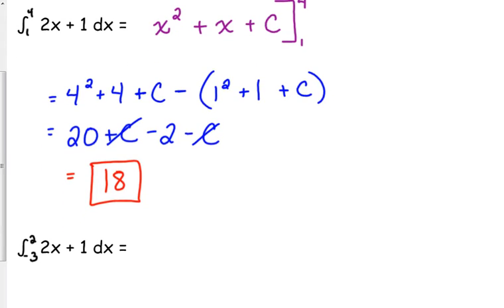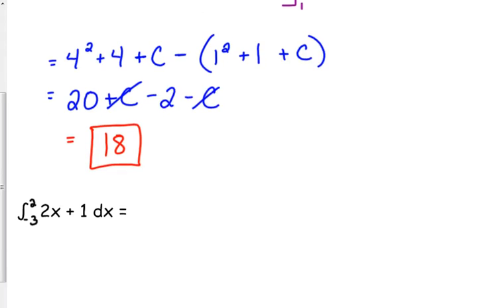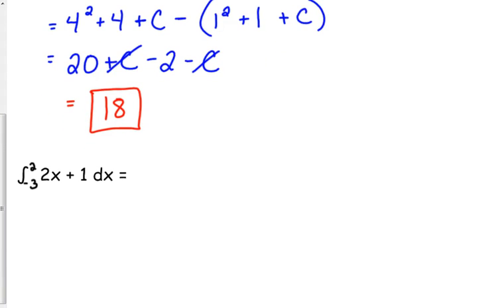Now that gave us 18. I want to do the exact same problem with different limits of integration to show you that your limits of integration matter. You're going to get a different answer. So let's do it from -3 to positive 2. Our anti-derivative is the same, but this time I'm just not going to worry about putting that plus C on there.